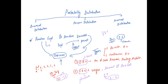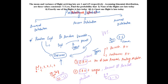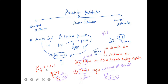So in today's video we discussed probability distribution, what a random experiment is, what a random variable is, and the types of random variables — discrete random variable and continuous random variable — along with their examples and meanings. Thank you so much for watching. See you in the next video.